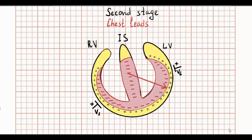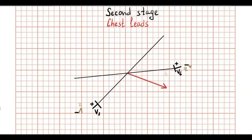The second stage is depolarization of the main mass of ventricles. The left ventricle is bigger than the right ventricle, so the resulting vector of ventricular depolarization is oriented to the left and downward. This depolarization vector points toward V6; therefore, V6 displays a tall positive R wave. This depolarization points away from the positive pole of V1; therefore, lead V1 shows a deep negative S wave.